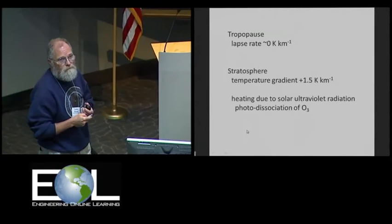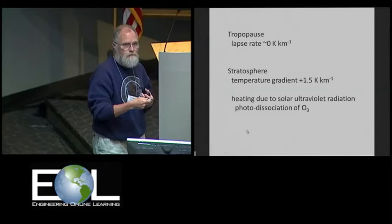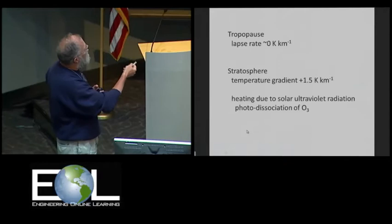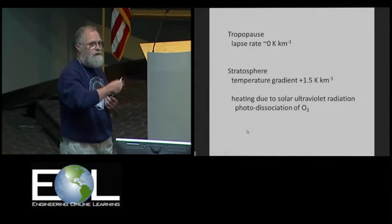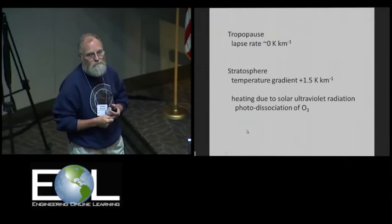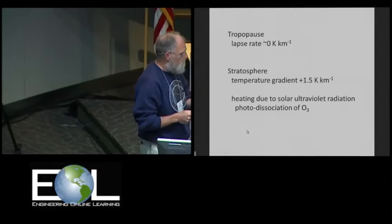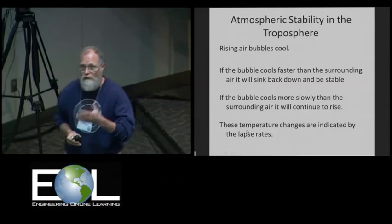In the tropopause, the lapse rate goes to about zero, temperature's not changing. And then in the stratosphere, the temperature gradient becomes positive, increasing with height. That's due, as we know, to solar ultraviolet radiation that interacts strongly with the ozone, and that heats up the atmosphere. So that's why the stratosphere warms up, because you have this heating going on. We'll see that's a relatively unusual phenomenon in the solar system. And we can also extract from this information whether or not the atmosphere is stable.